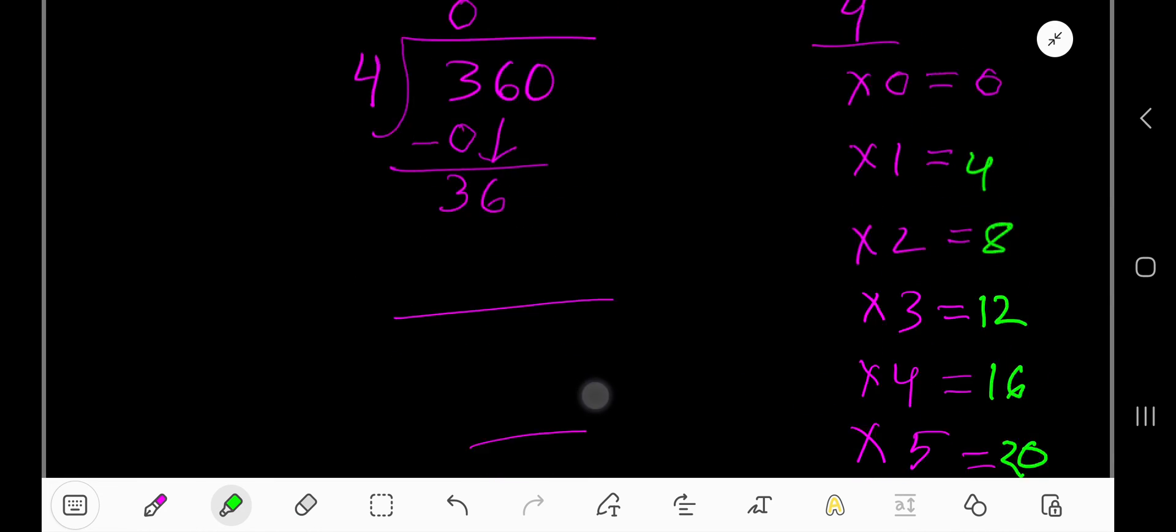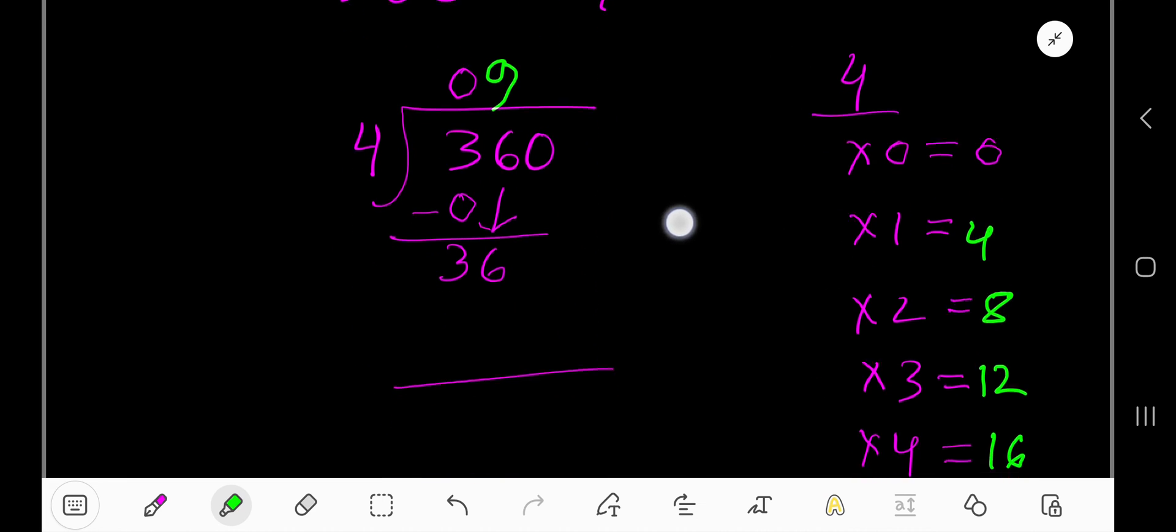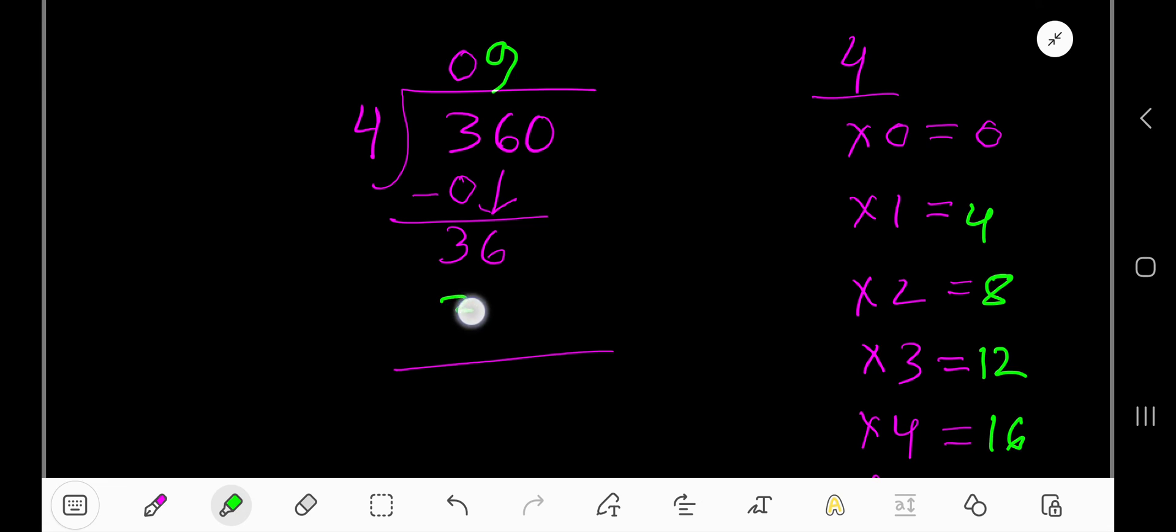Write 9. 9 times 4 is 36. If you subtract, you get 0. Bring down this 0. 4 goes into 0 how many times? 0 times. Write 0. 0 times 4 is 0. If you subtract, you get 0.